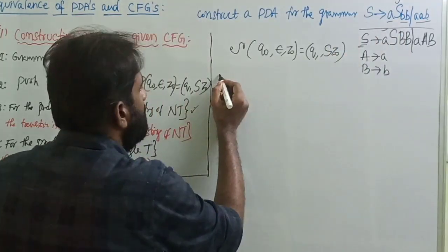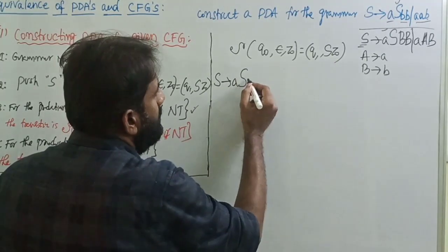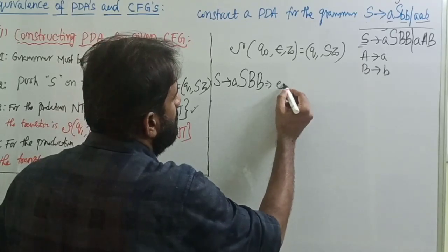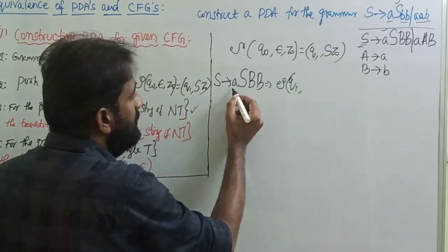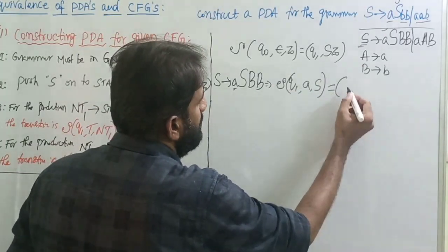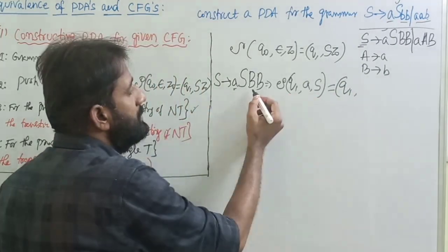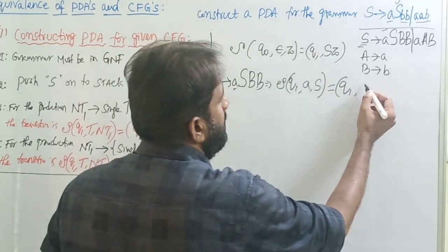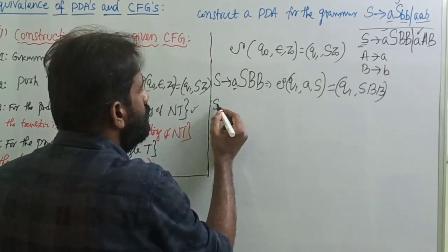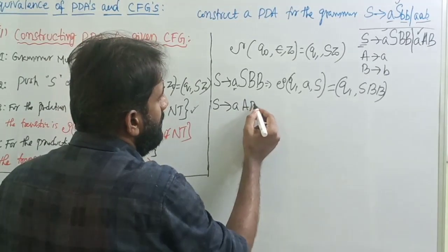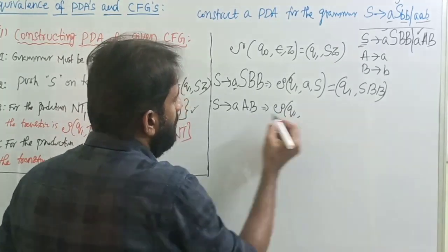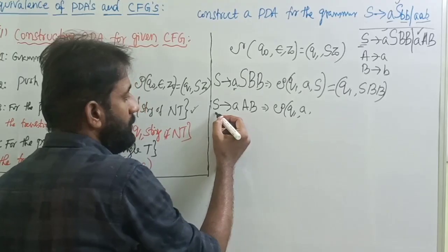Next, take the production S → a A B B. How do we write the transition for this? The transition of Q1, input symbol is small a, and top of the stack is capital A — that is the transition δ(Q1, a, S) = (Q1, A B).